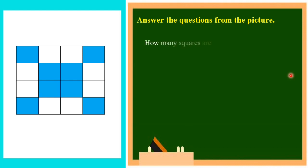Question number one: how many squares are there in this grid? Counting 1 through 16 — so there are 16 squares in total.